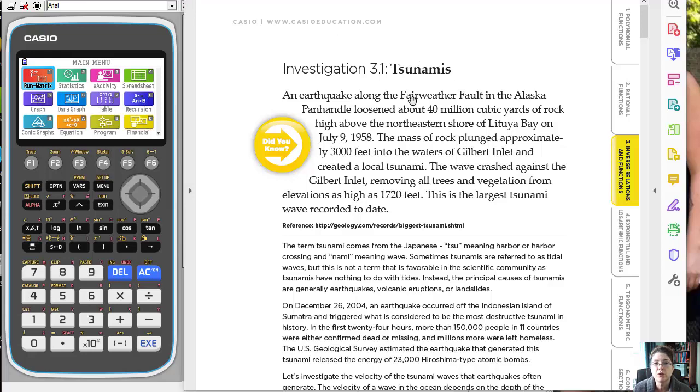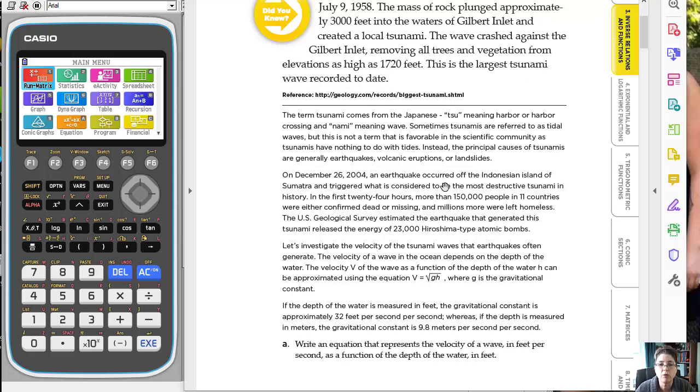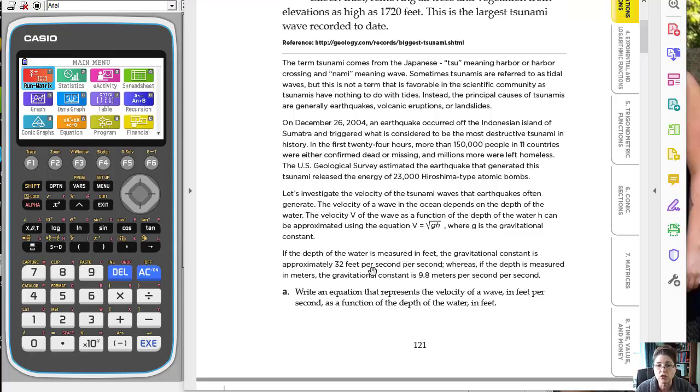So what I wanted to just kind of talk briefly about the activities because they're really nice. So these are two different activities, both that have to do with inverse functions. But you'll notice this is the first one called tsunamis and it has a little situation but then the problem itself is talking about earthquakes and how they cause tsunamis and the students end up with a formula, an equation for the velocity of the waves as a function of the depth of the water and the gravity, gravitational constant.